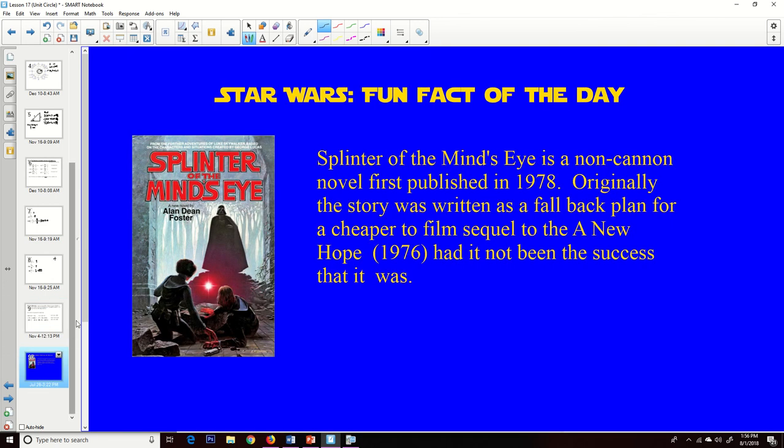Well, that's all I got for today, folks. So we are to the Star Wars fun fact of the day. Splinter of the Mind's Eye is a non-canon novel first published in 1978. Originally, the story was written as a fallback plan for a cheaper film sequel to A New Hope. The original Star Wars was a lot of money and it was a big gamble. And so if it didn't make as much money and they still wanted to do a sequel, they were going to do Splinter of the Mind's Eye, but it was massive. Star Wars was massively popular. And so they, instead of doing this cheaper version that wouldn't have cost them too much to film, they did the big spectacular Return of the Jedi. Well, have a good day, folks. That's all I got. Goodbye.